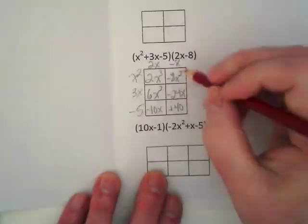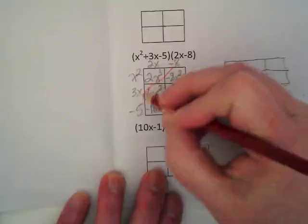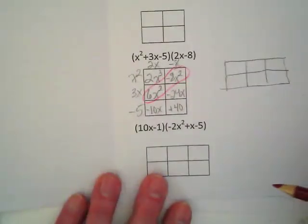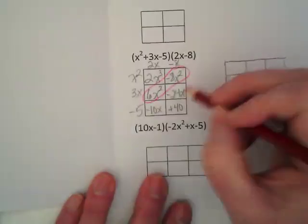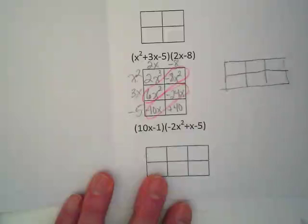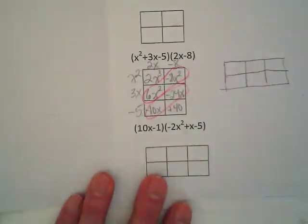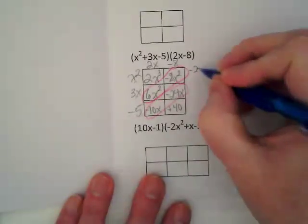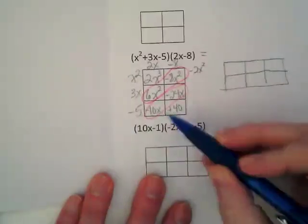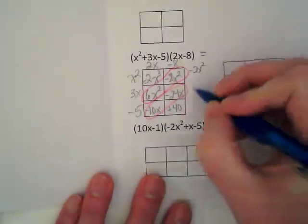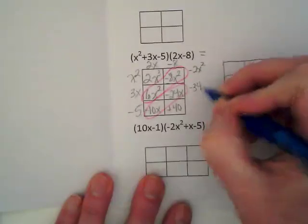I'm going to highlight here, we have like terms diagonally. It's one of the things that I really like about this method, that they show up where we can easily identify them and combine them before we rewrite this as our answer. So, I've got 6x² and -8x². When I combine those, I get -2x². And then I've got -10x and -24x gives me -34x.